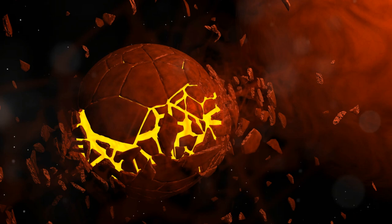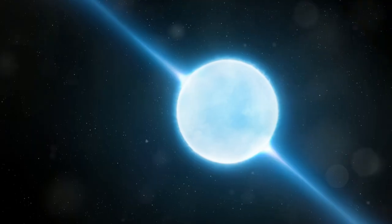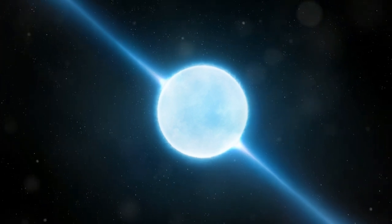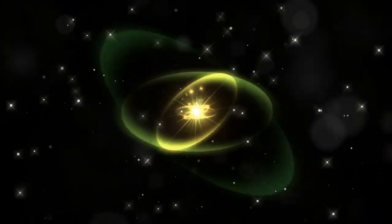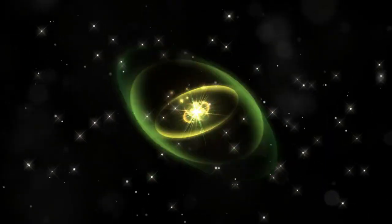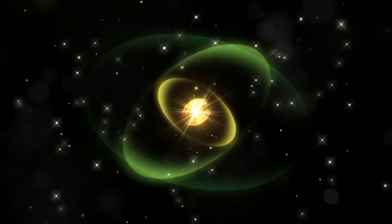Ever heard of neutron stars? These are the remnants of massive stars that have exploded in supernovae. They are incredibly dense. Just a teaspoon of neutron star material would weigh about 6 billion tons. They spin incredibly fast, sometimes hundreds of times per second, emitting beams of radiation that make them appear like cosmic lighthouses.